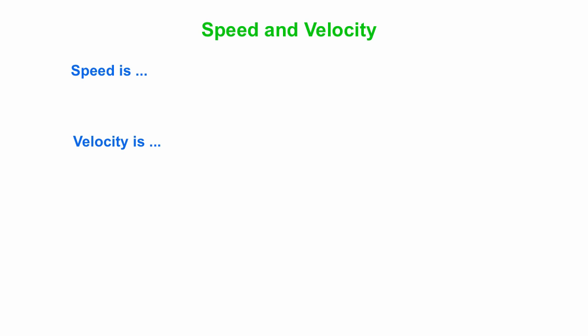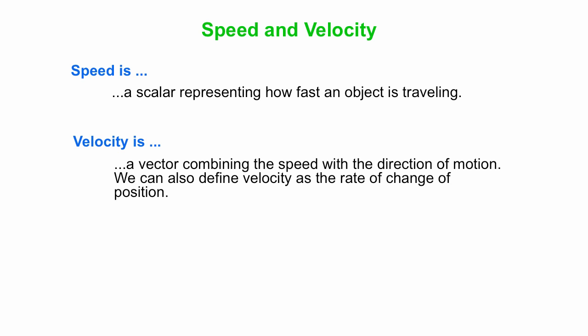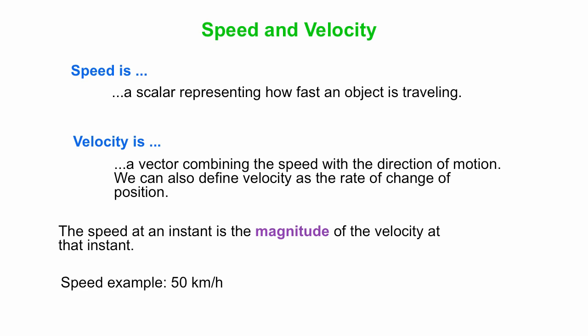So what is speed, and how does it compare to velocity? Speed is simply a scalar representing how fast something is moving. Velocity combines speed with the direction of motion. We can also define velocity as the rate of change of position, the time rate of change of position. The speed at any instant is the magnitude of velocity at that instant. Here's an example of speed, 50 kilometers per hour. Convert that to a velocity, you have to combine that with the direction, 50 kilometers per hour north, for instance.